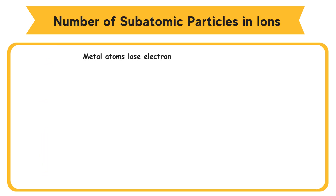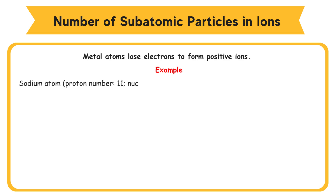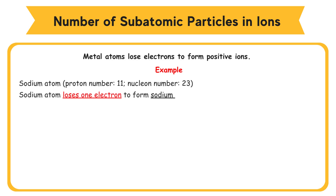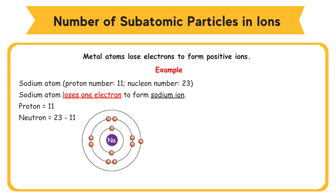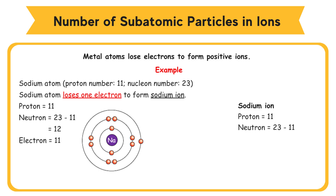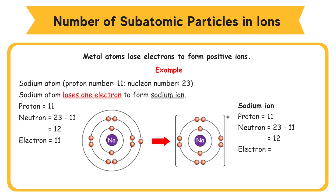Metal atoms lose electrons to form positive ions. For example, a sodium atom with proton number 11 and nucleon number 23 loses one electron to form a sodium ion. In the sodium atom: protons = 11, neutrons = 23 − 11 = 12, electrons = 11. In the sodium ion: protons = 11, neutrons = 12, electrons = 11 − 1 = 10.